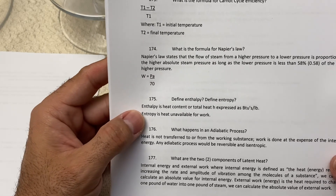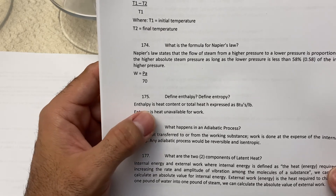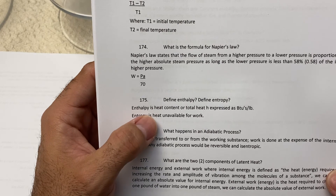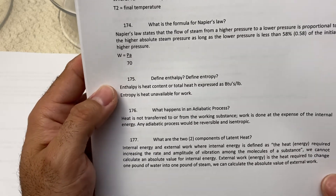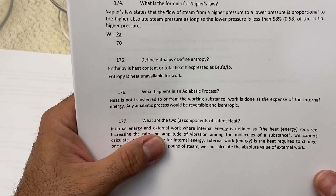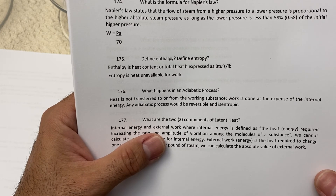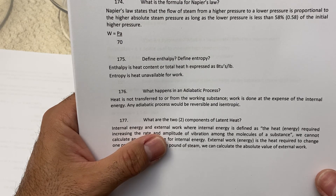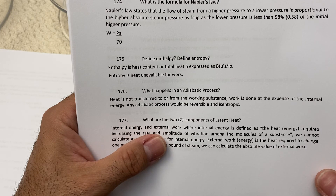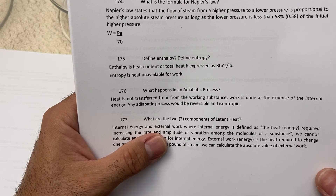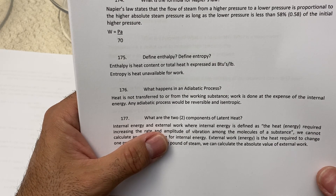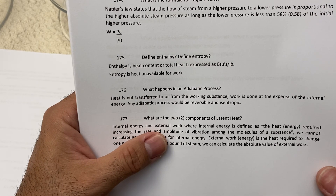Also important for beginners: enthalpy is heat expressed in BTUs per pound. You also need to know the definition of latent heat — heat added to a substance that changes the state of the substance without changing its temperature. The latent heat for water to become steam is 970.3 BTUs, and the latent heat for one pound of ice to become one pound of water is 144 BTUs.